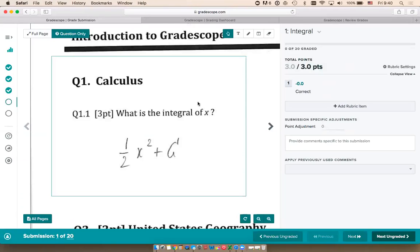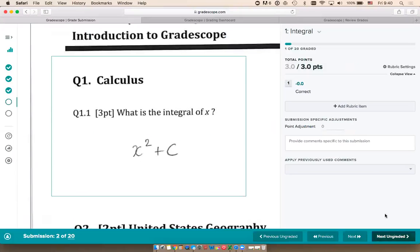In this case, the student got the correct answer. That is indeed the integral of x. To check that off, I'm just going to check the correct rubric item. The student got zero points deducted and got a full score of three out of three for this question. Now I'm going to click next, and I'm seeing a different student's answer to the same question.